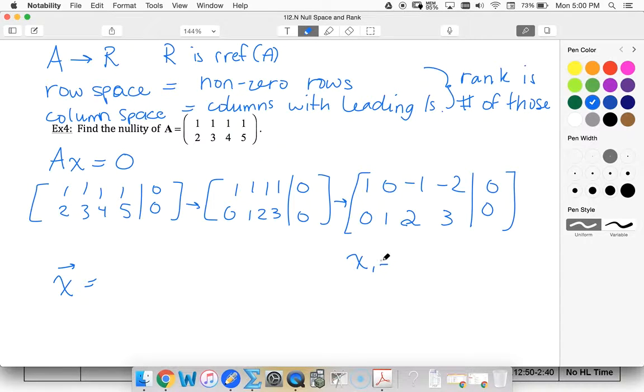I've got x1 equals s plus 2t. x2 is going to be equal to negative 2s minus 3t. And of course we said x3 was s, x4 was t.